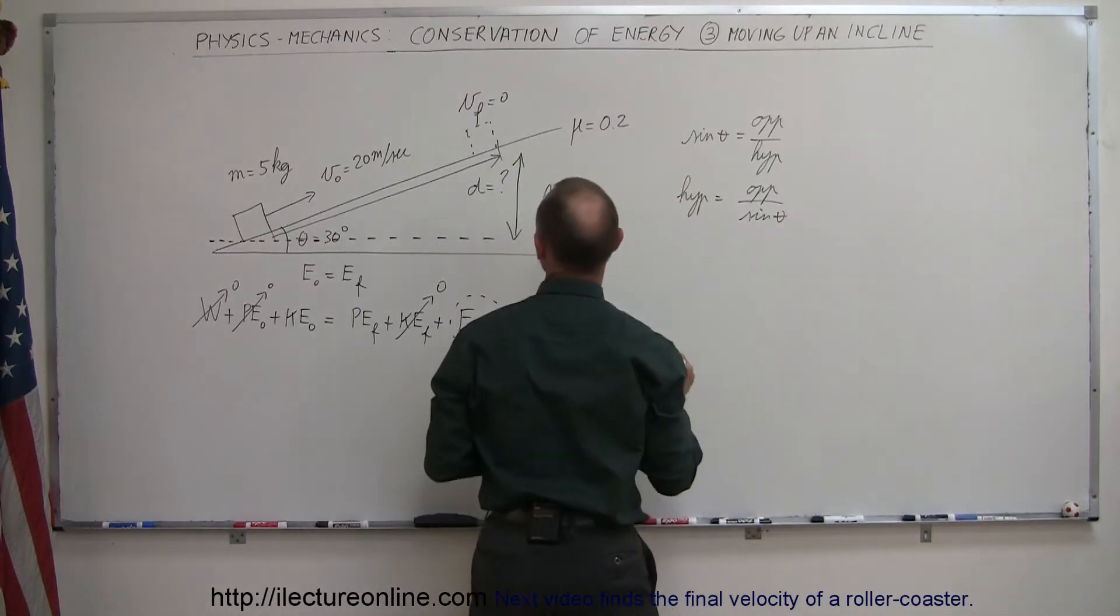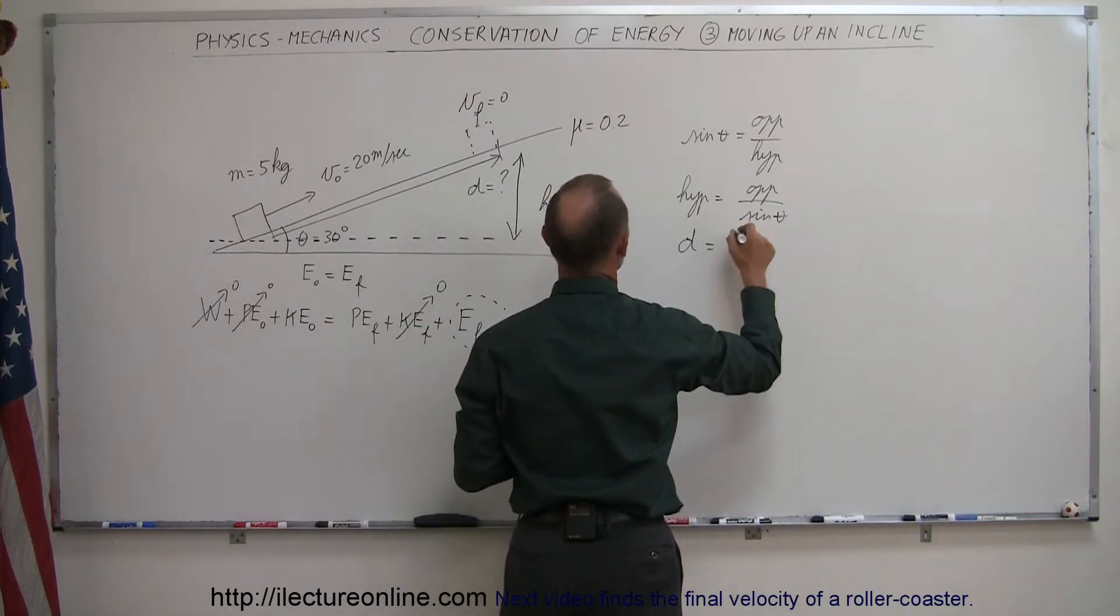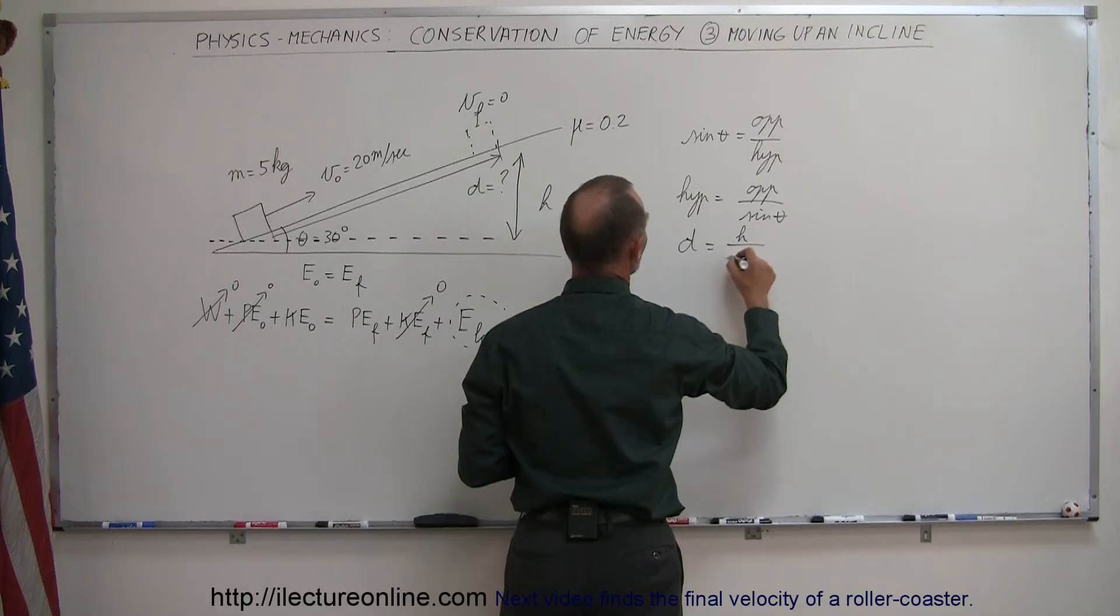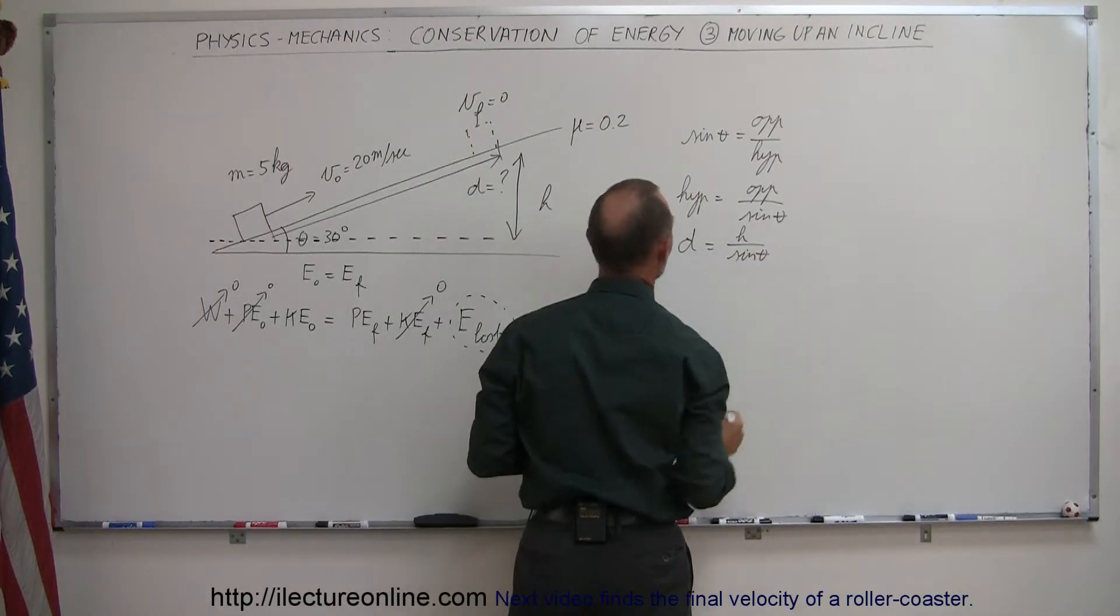In other words, we can say that the hypotenuse, which is D, is equal to the opposite side, which is H, divided by the sine of theta, sine of theta like that.